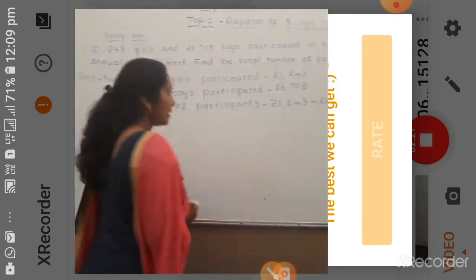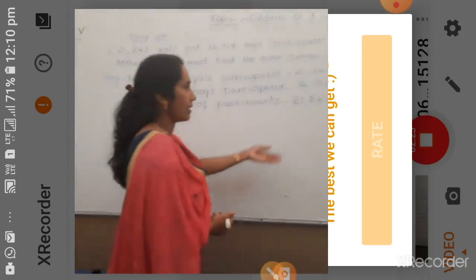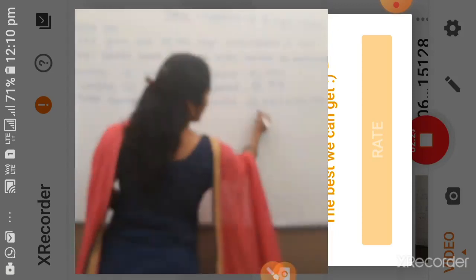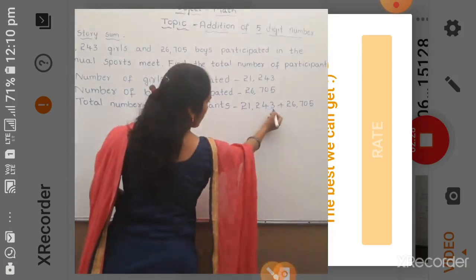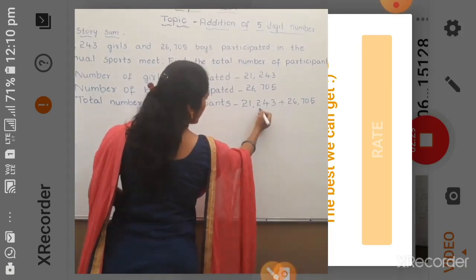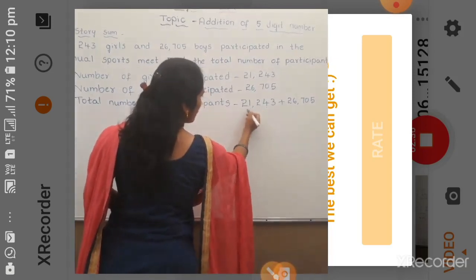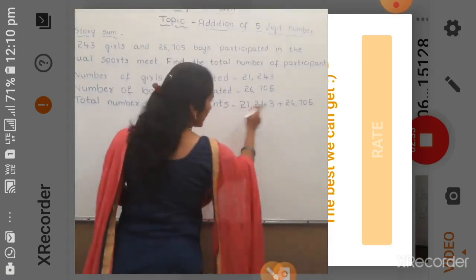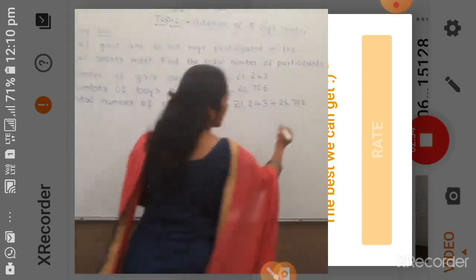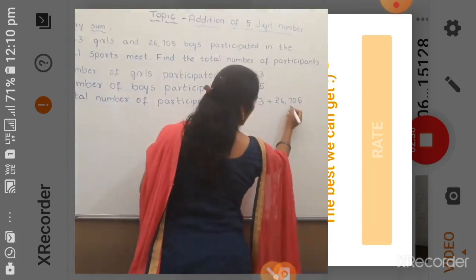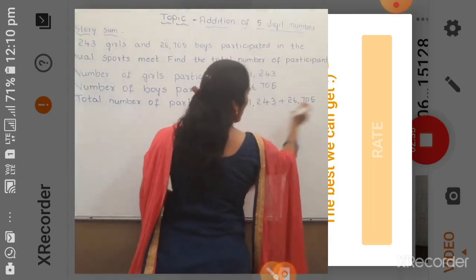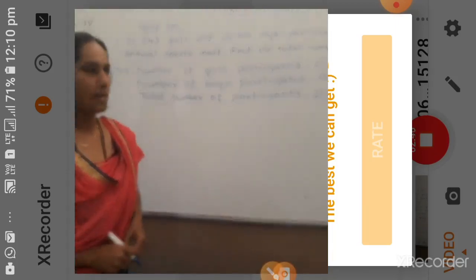So for the total number of participants, we are going to add: 21,243 plus 26,705. We have to add the number of girls and number of boys. If you observe the number of girls — 1, 2, 3, 4, 5 — it is a 5-digit number, and the number of boys is also 1, 2, 3, 4, 5 — also a 5-digit number.